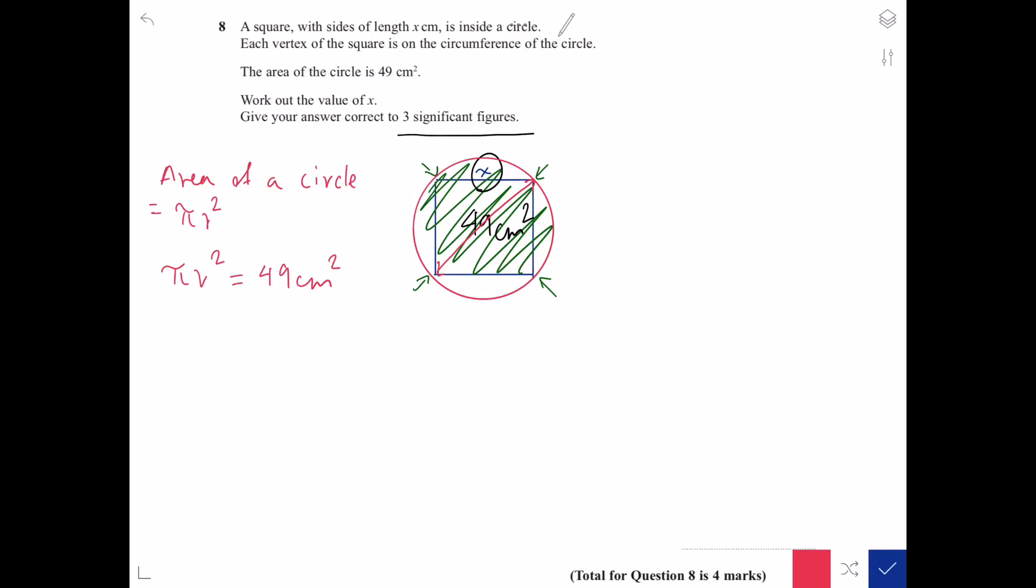49 over π square rooted is 3.949 centimeter. Now I've worked out the radius of the circle. To find the diameter I need to multiply the radius which is 3.949 multiplied by 2. 3.949 times 2 is 7.898 centimeter, so that is the diameter.